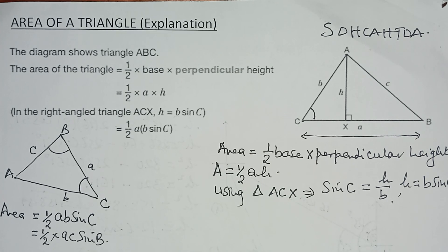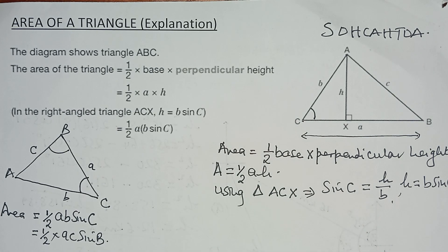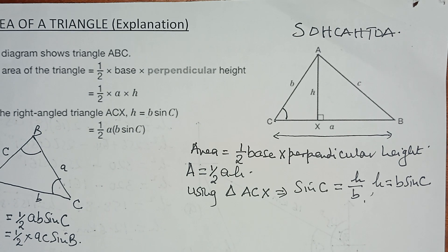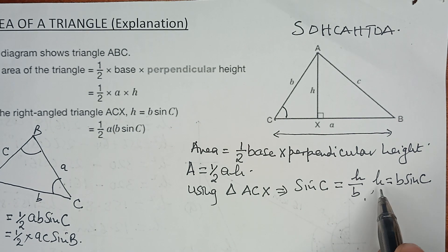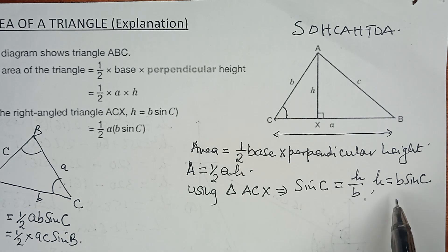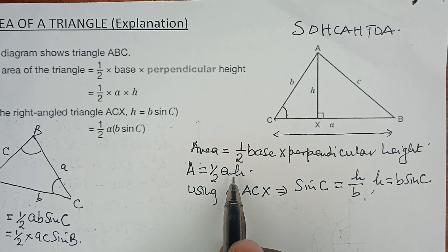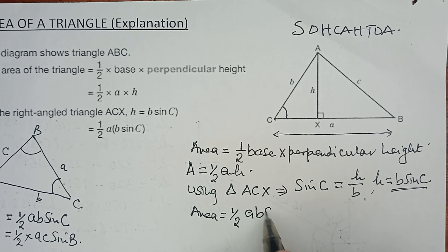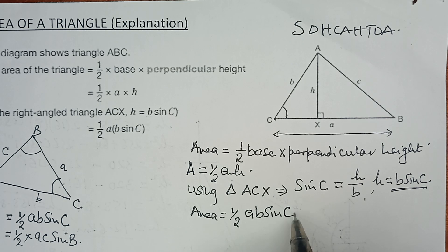...and have H equals B sine C. In other words, if we are now using that, we can already see that H equals B sine C. Now, we would want to substitute H in this particular formula, and we have the area is a half times A times H, which is B sine C.